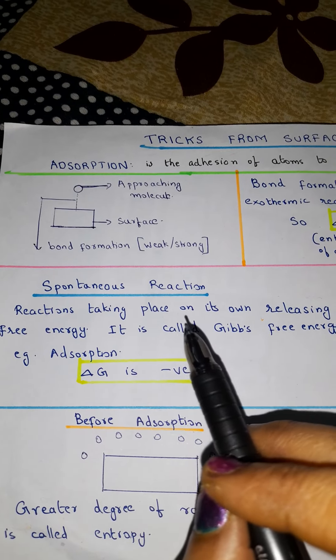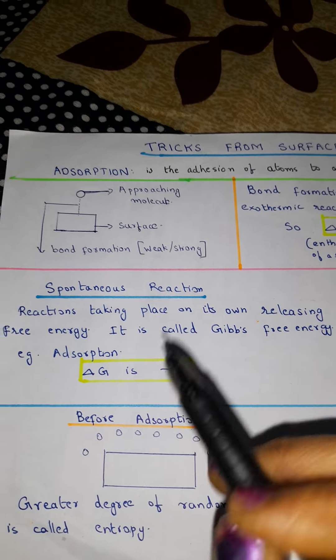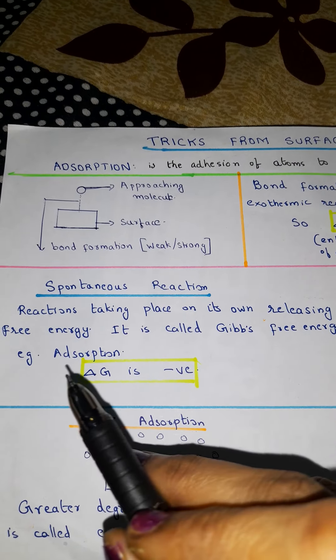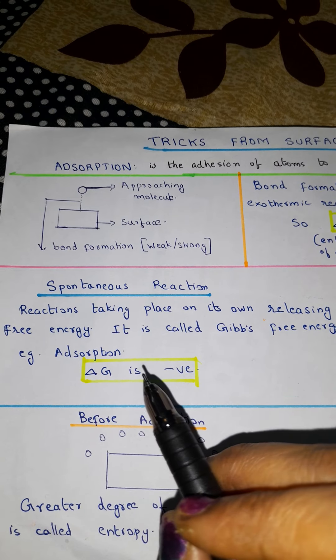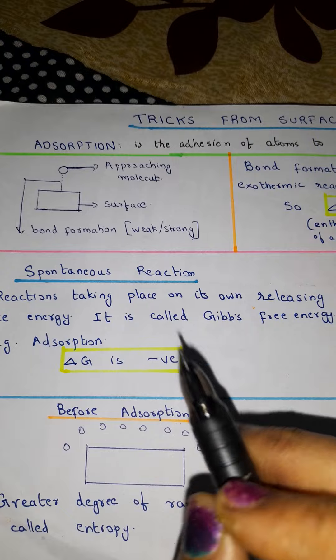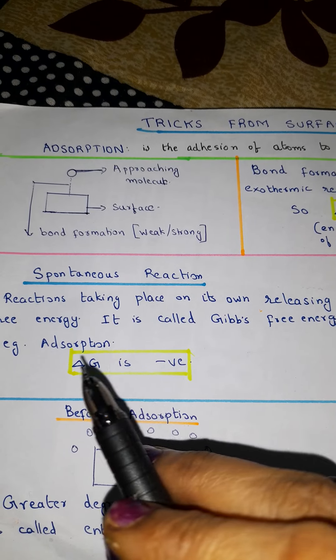Whichever reaction takes place on its own, giving out free energy, is called a spontaneous reaction and we have got that example, that is adsorption. So here also delta G is negative. So remember for a spontaneous reaction like adsorption, delta G is negative.